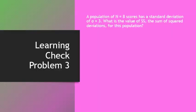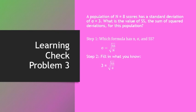Final learning check, problem 3. Pause the video to work the problem. In this case, we're told we have a population of eight scores and a standard deviation of 3, and they want you to find the value of sum of squares. We need to think back to our equations — which equation has n, standard deviation, and sum of squares? Standard deviation is equal to the square root of sum of squares over n. Fill in what you know: standard deviation is 3, n is 8. To solve, square both sides to get rid of the square root sign, giving 9 equals sum of squares over 8. Then cross multiply and you end up with sum of squares equal to 72.